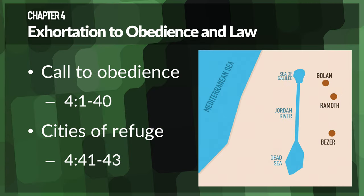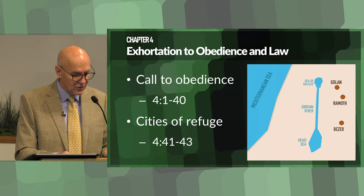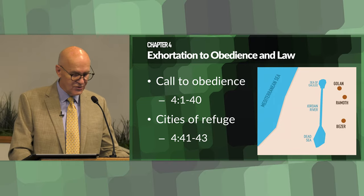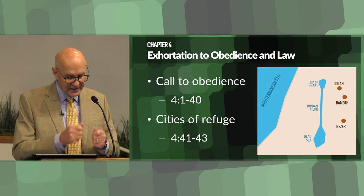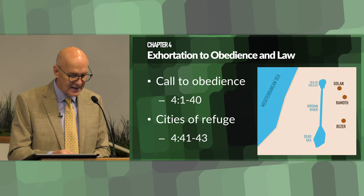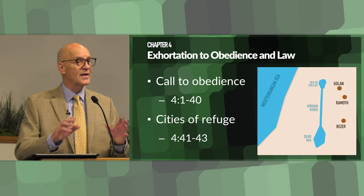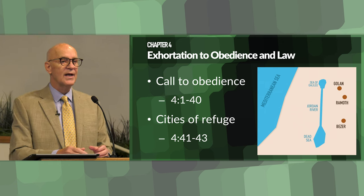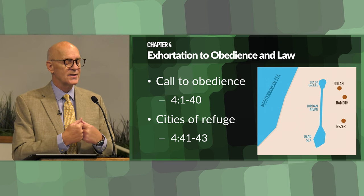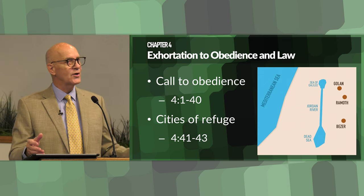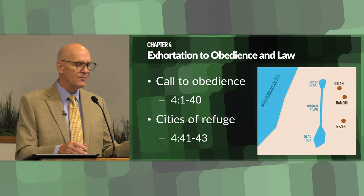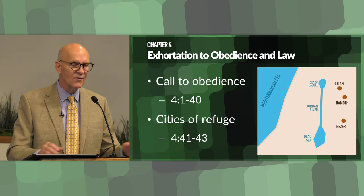In chapter four, there are exhortations to obedience and care for the law. A call to obedience — Deuteronomy 4:1–40. Moses urges the Israelites to adhere strictly to the laws given by God, warning against idolatry and encouraging them to teach these laws to their children and their children's children. He establishes the legal and religious framework that will govern their life in Canaan: they will succeed in the new land if they obey God's commands and teach this spirit of obedience to their children. It's all based on maintaining the covenant of obedience with God — not how big the army is.